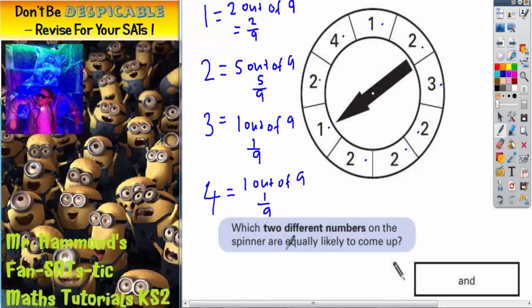So which two numbers are equally likely to come up? Well, we've got 2 out of 9, 5 out of 9, 1 out of 9, and 1 out of 9 again. So it's these two numbers, 3 and 4. So that's what we write in the answer box.